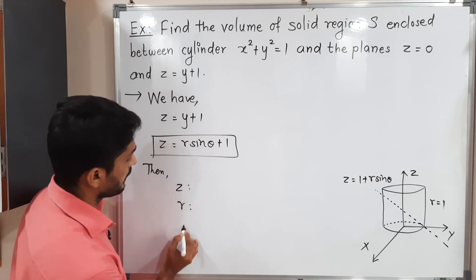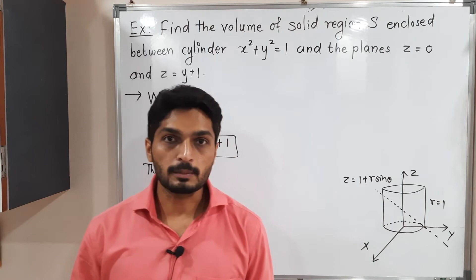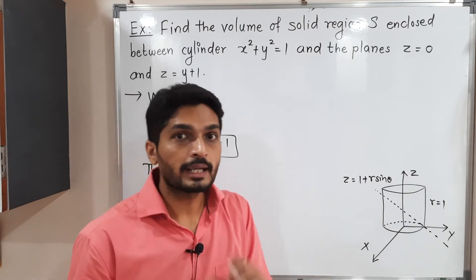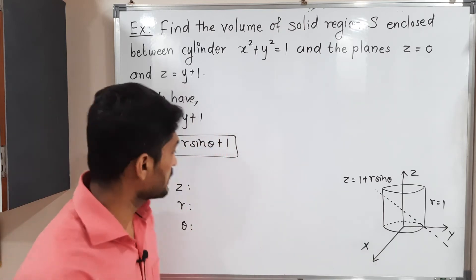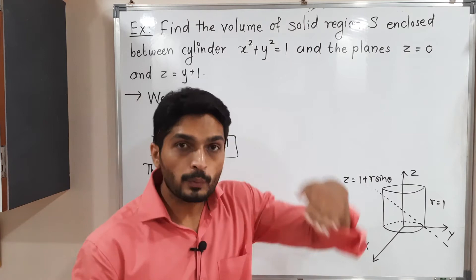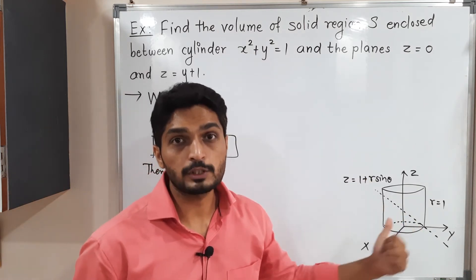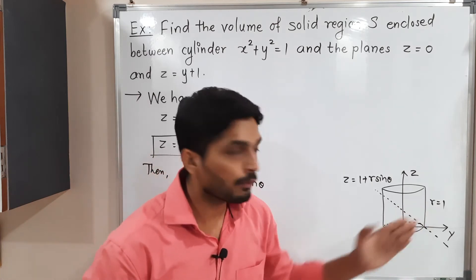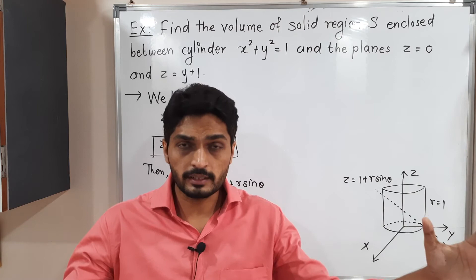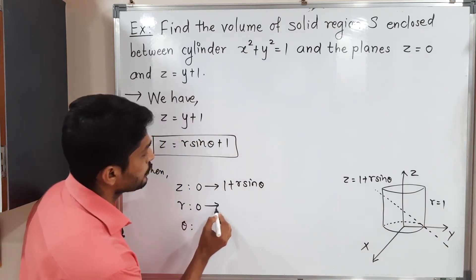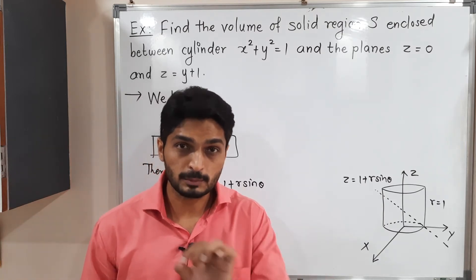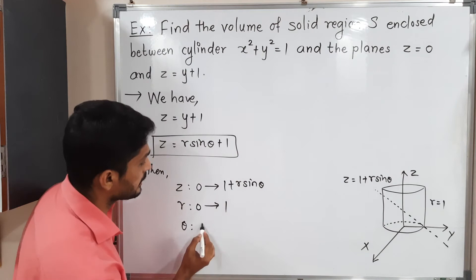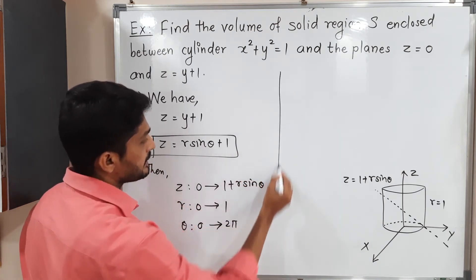We can now find the limits. In cylindrical coordinates, the strip is parallel to the z-axis: z goes from 0 (the xy-plane) to 1 + r sinθ (the cross plane). The radius r goes from 0 to 1, since the region cannot go beyond the cylinder. To cover a complete cylinder, θ goes from 0 to 2π.